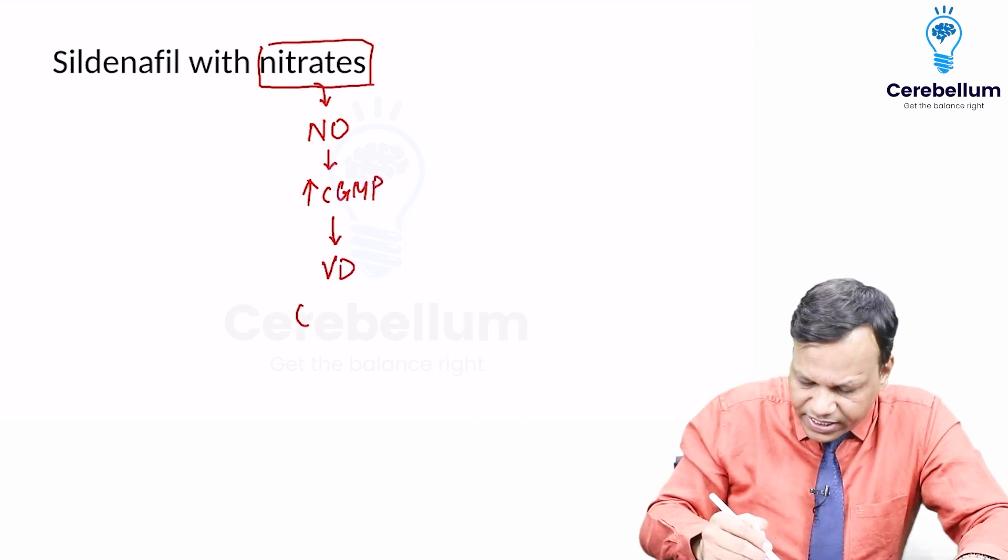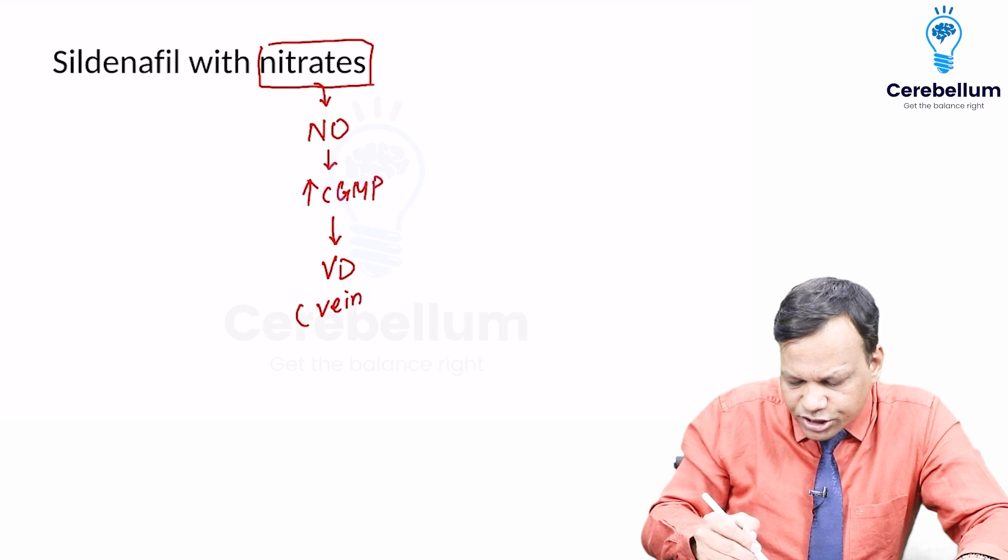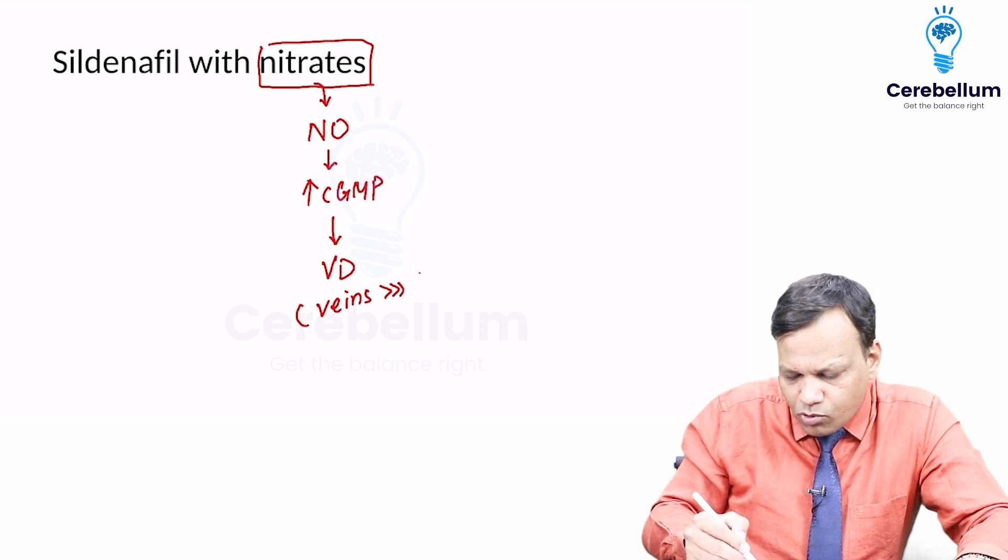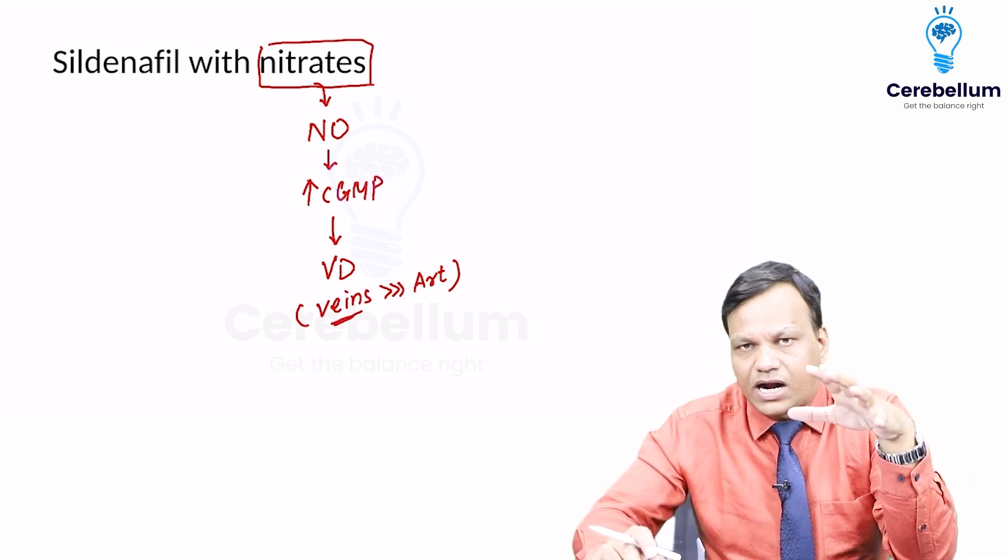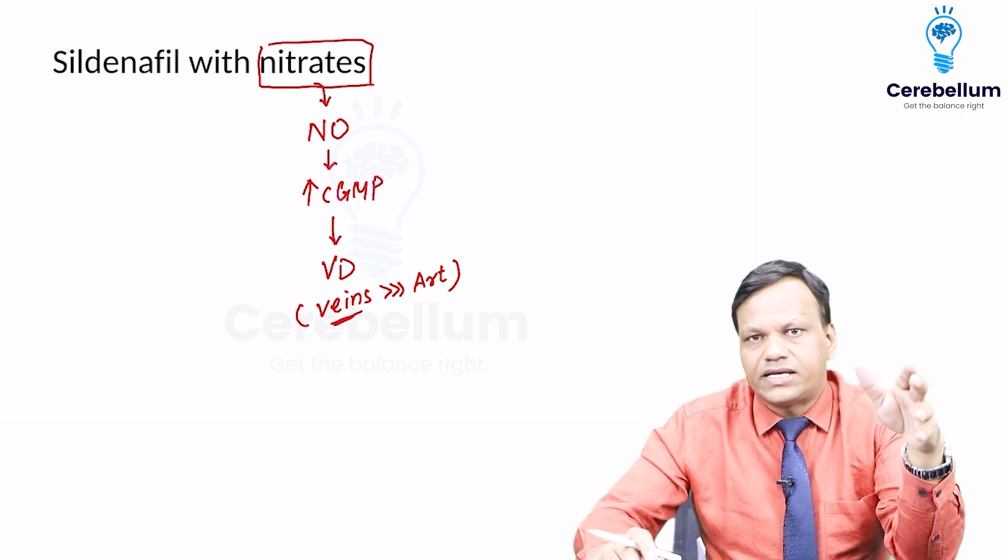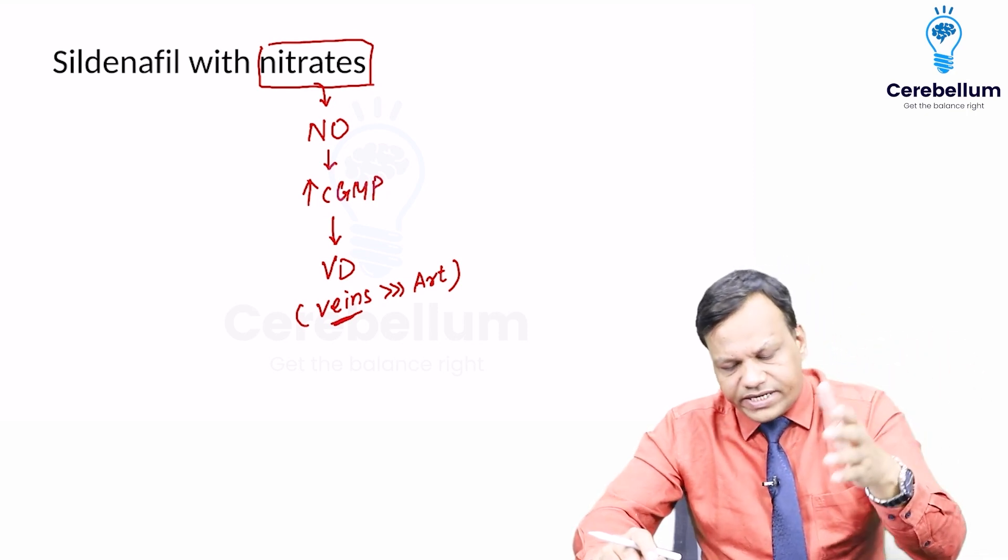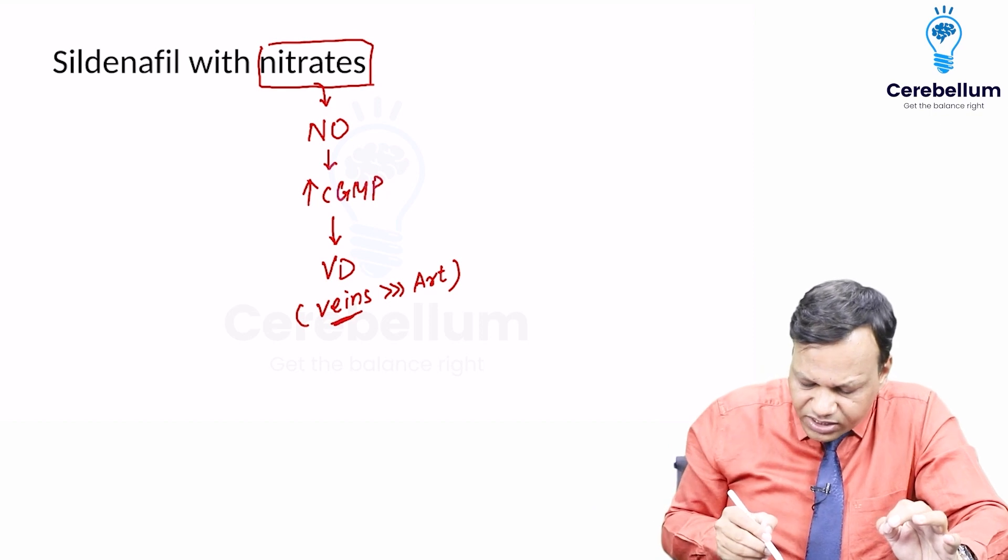In the case of nitrates, there is predominantly dilatation of veins more than arteries, and this venodilation decreases the preload. The person's heart work decreases and the angina is relieved. So nitrates are used in angina.